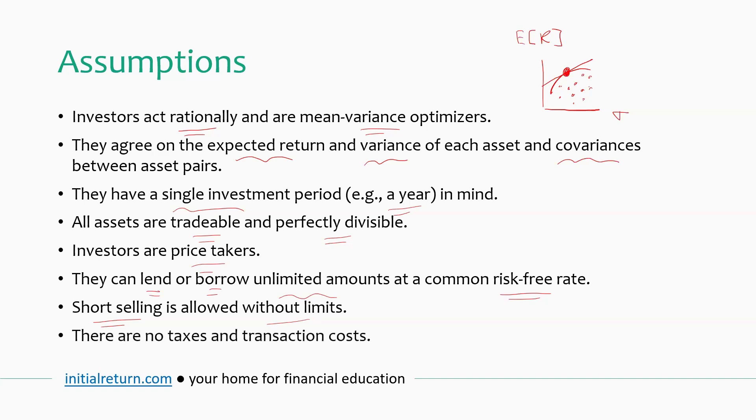And final assumption is that there are no taxes and transaction costs. Again, this simplifies the mathematics quite a bit. So we can actually introduce taxes into the model because in reality there are taxes, but it just makes the model a bit less tractable. And transaction costs exist in reality as well. Think about, for example, trading commissions and so on. So like I said, so these are the assumptions for the standard model. You can't relax all of these assumptions, but some of them can be relaxed in extended versions.